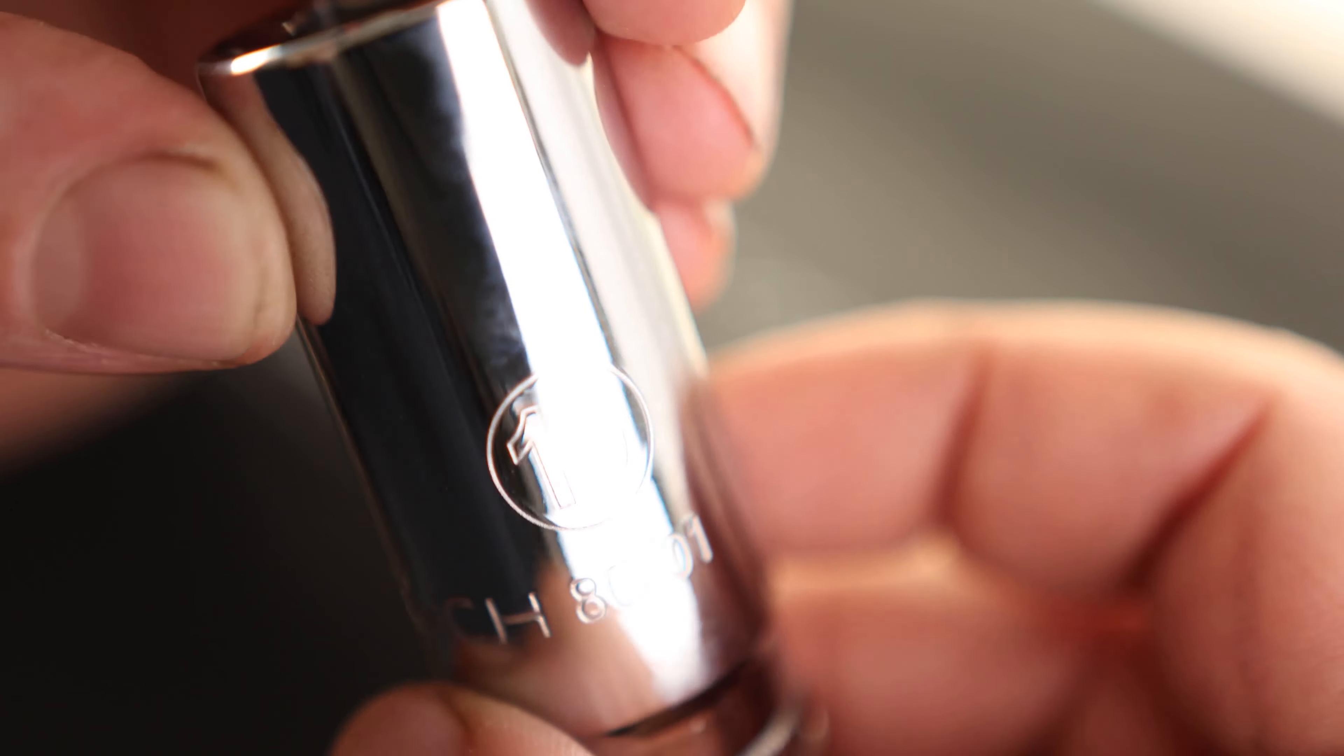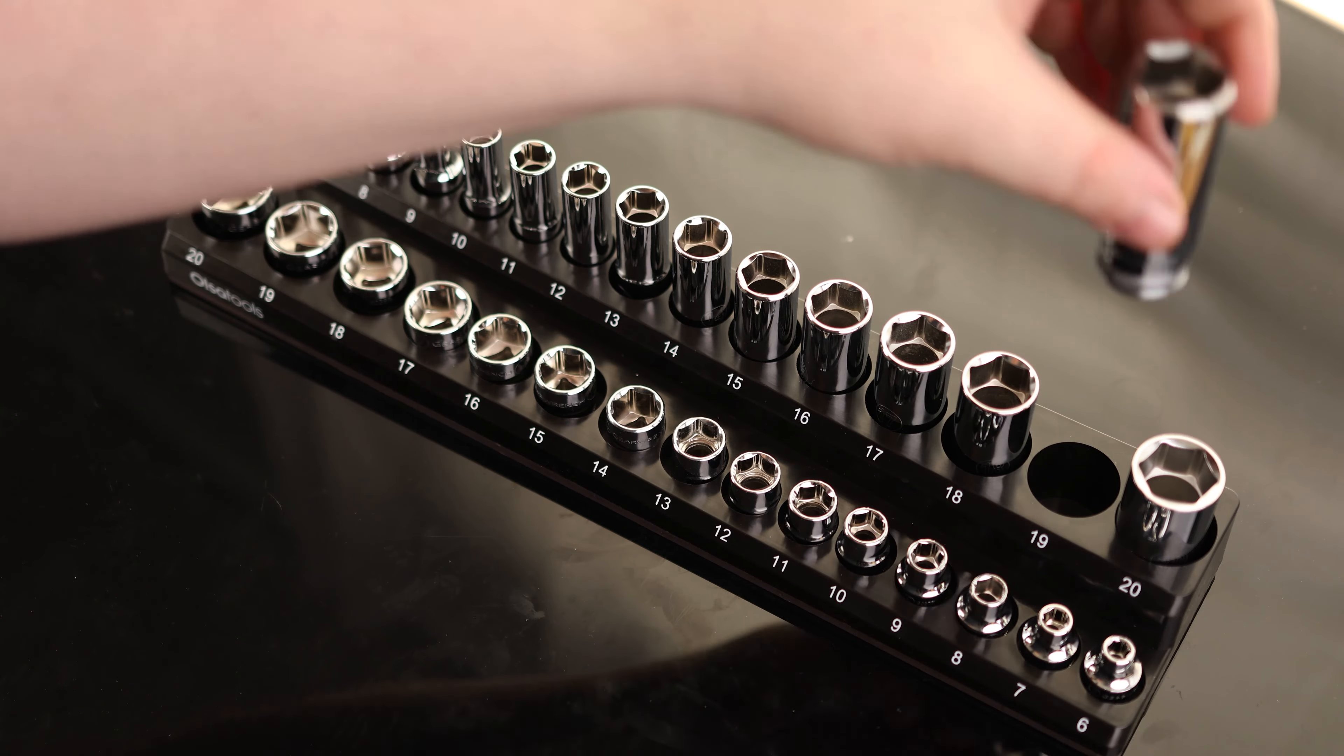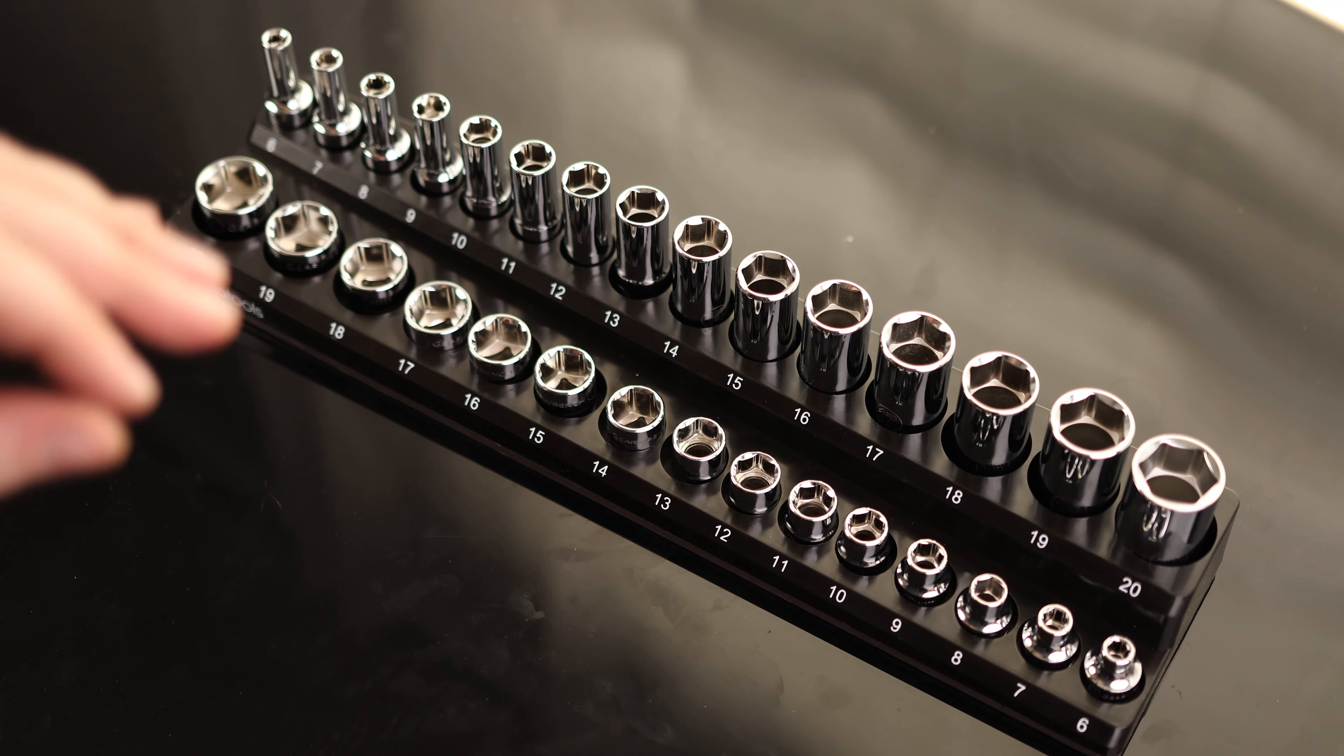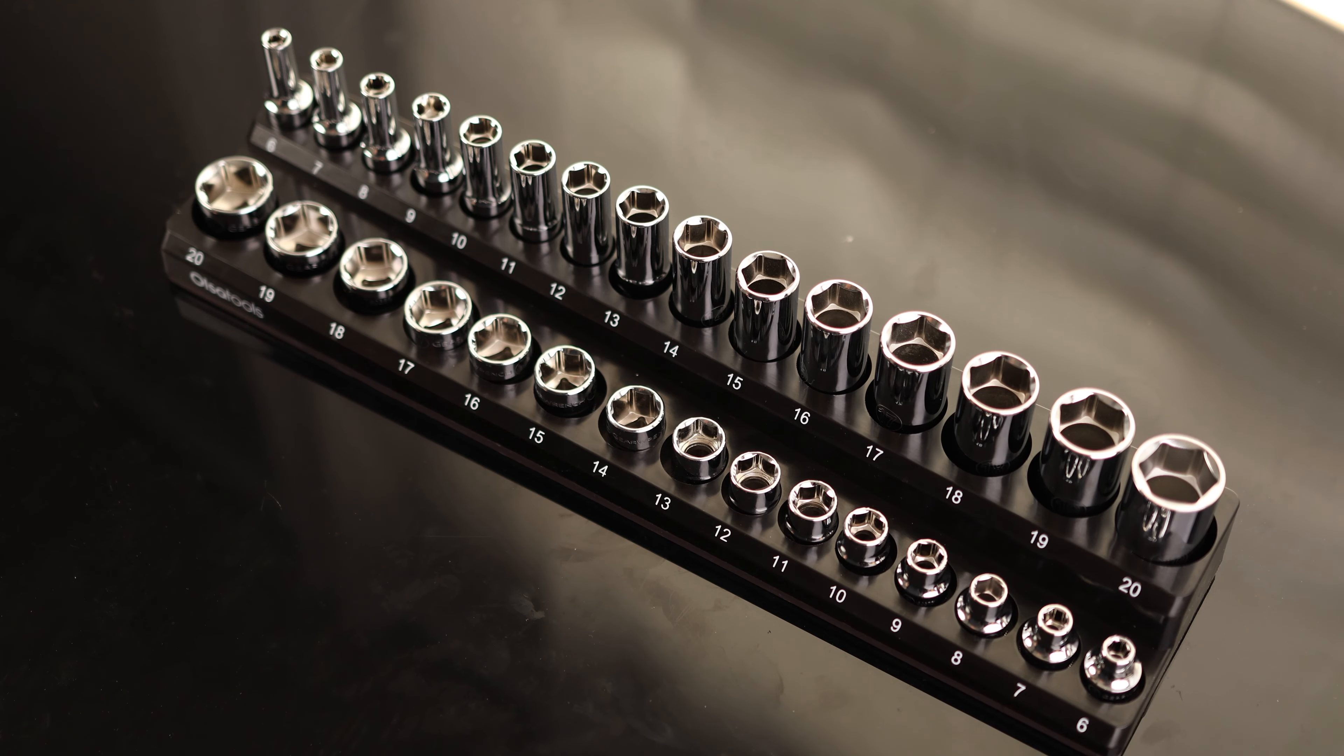So this does come on a rail, and this actually is a very nice rail. So if we want to, we can't pull the sockets all the way off, which means we could also add more if we needed to. So I could just get another one of those 3.8 drives, and I could use that socket on this rail and get a complete set this way. I just really love that style of organizer, so that's going to be what I'm going to be using.